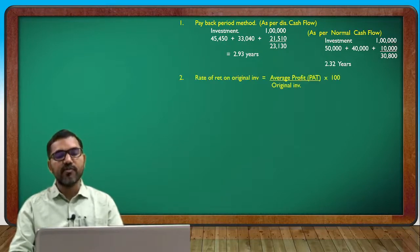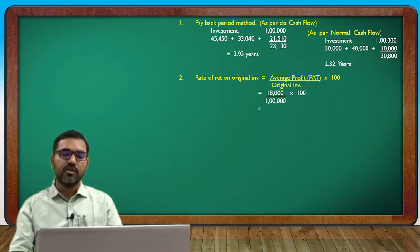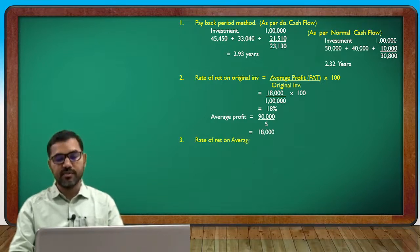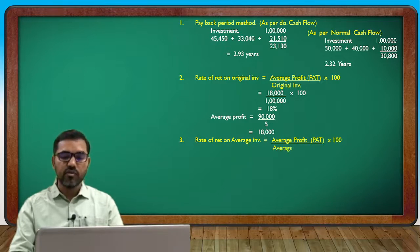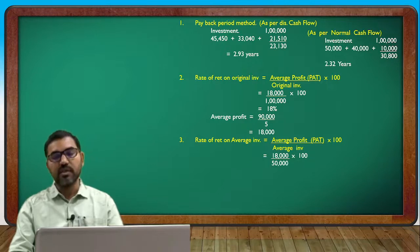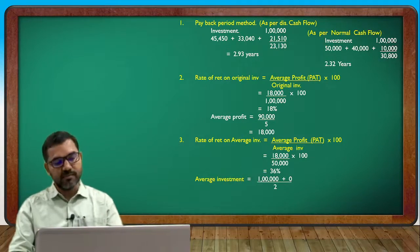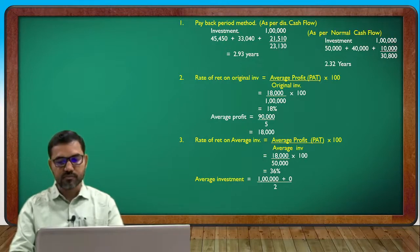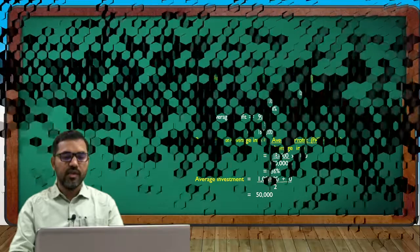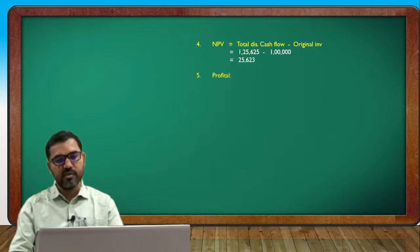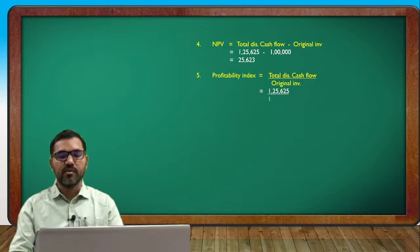Rate of return on original investment: average profit divided by original investment multiplied by 100 percent. Average investment say 50,000 because scrap value is zero — 36% on average investment. The calculation is straightforward. Next, the fourth method is Net Present Value: NPV = total discounted cash flow minus initial investment = 1,25,623 minus 1,00,000. Profitability Index = discounted inflows divided by 1,25,623 divided by 1,00,000 = 1.25.